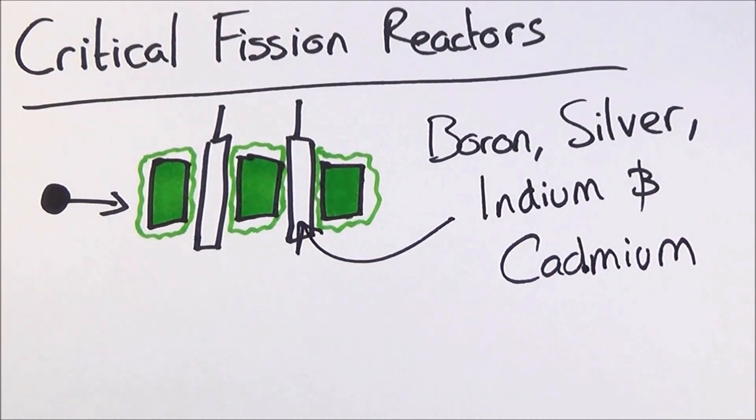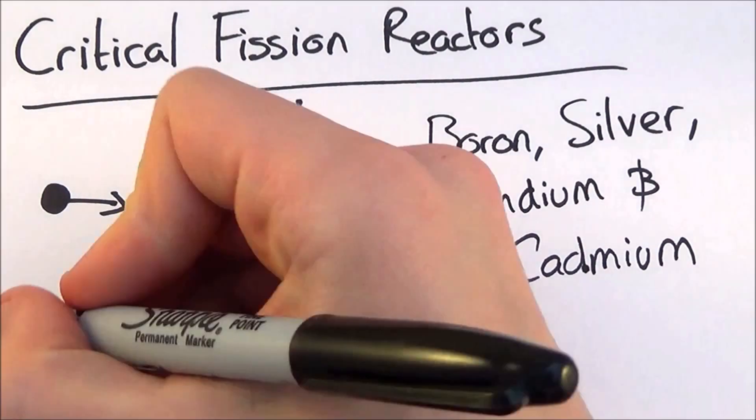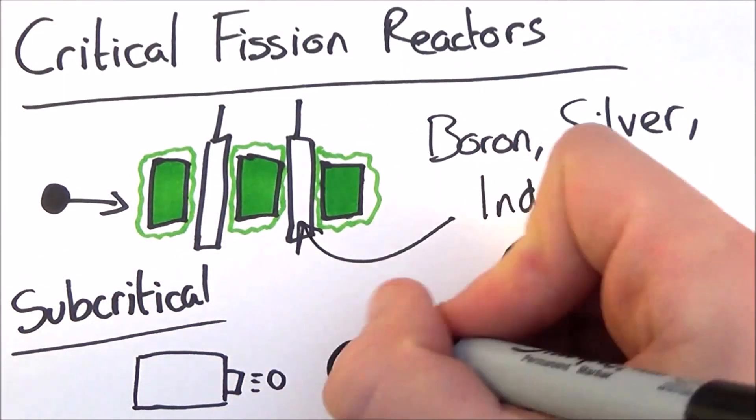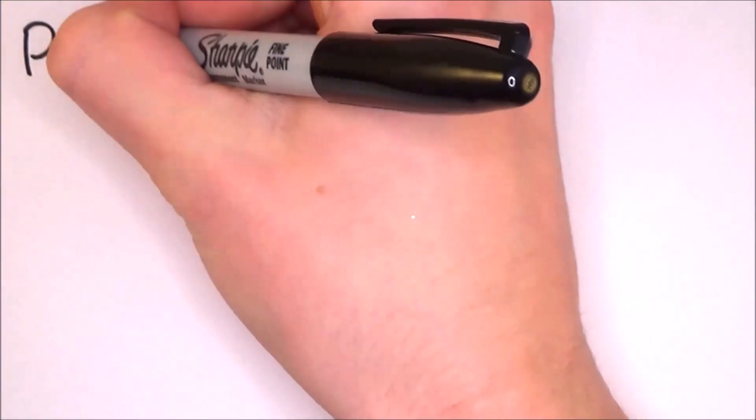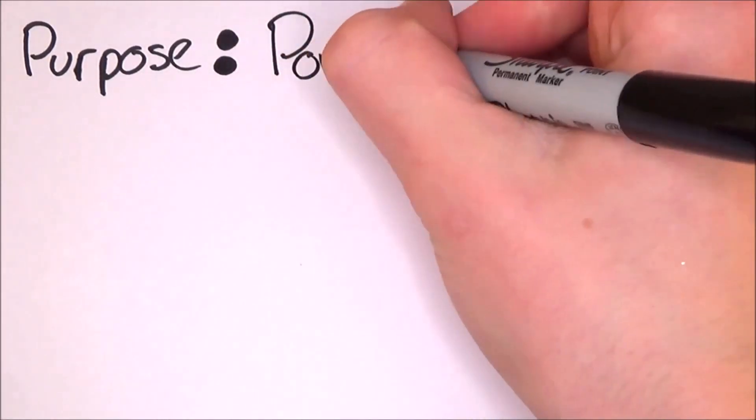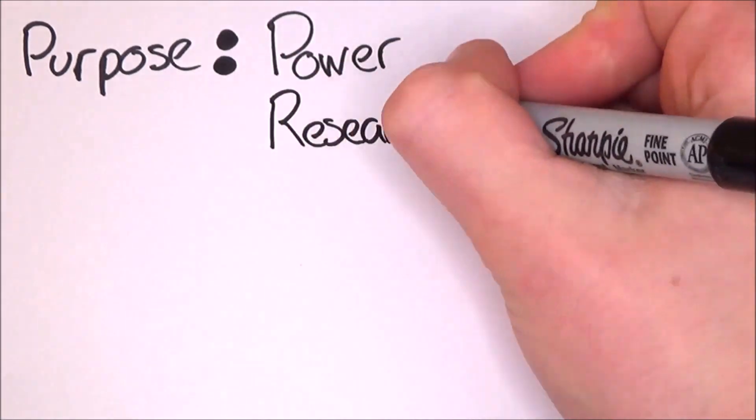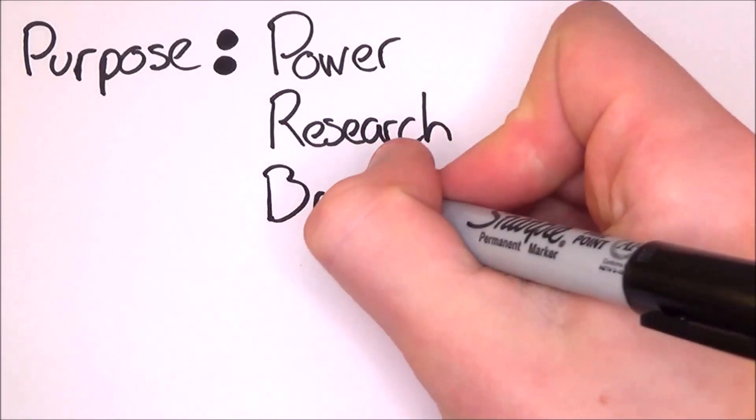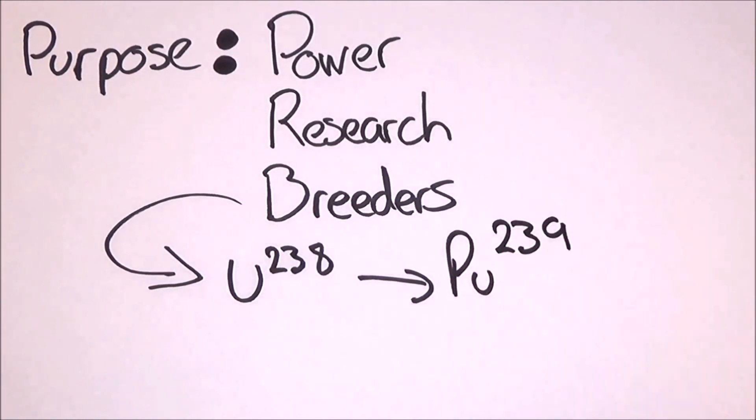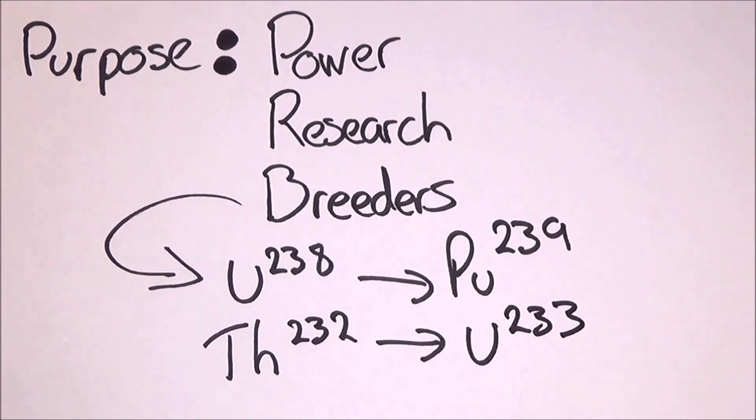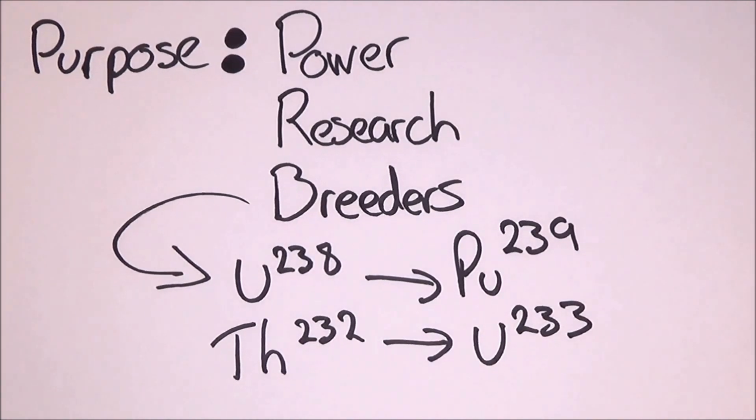You can also get subcritical fission reactors, which use natural radioactive decay or particle accelerators to trigger fission. There are three main types of reactors. Power reactors, which produce electricity for local power networks. Research reactors, which are intended for scientific, medical, and engineering purposes. And the last one is breeder reactors. These are used to get nuclear material from more abundant elements, such as uranium-238 is turned into plutonium-239. Thermal breeder reactors are currently being developed and at this moment turn thorium-232 into uranium-233.